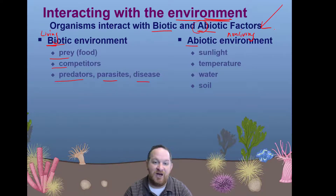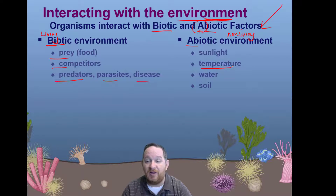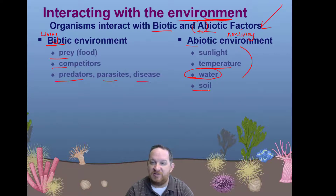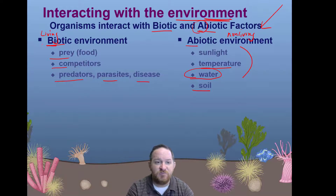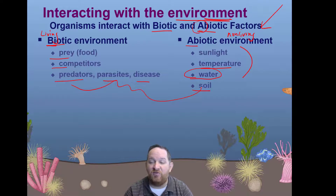In terms of abiotic factors in this marine ecosystem — non-living factors — these still contribute to the environment, but they're maybe not as noticeable. Things like sunlight, if it makes it down into this ecosystem. The temperature of the water is important in this case. Or if you're talking about a land ecosystem, the temperature on land. Of course in marine ecosystems, water is very important. These are all non-living things, and in this case we also have some soil down there. The difference between biotic and abiotic — living, non-living — all of these things must be taken into account when we're talking about interacting in our environment.